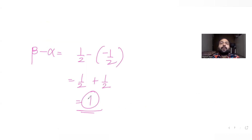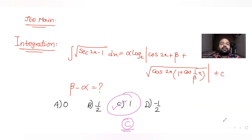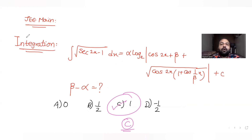I hope you have understood how to solve this type of question on indefinite integration. We used the idea of rationalizing the numerator, then substituted cos 2x as t to solve the integral and get the values of alpha and beta. I'll see you again tomorrow with another question. Stay tuned, and do like, share, and subscribe to my channel. Thank you.